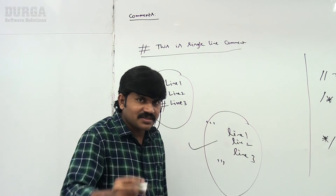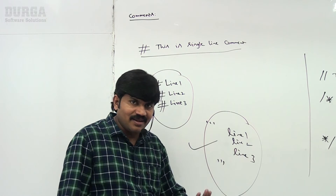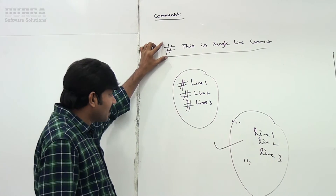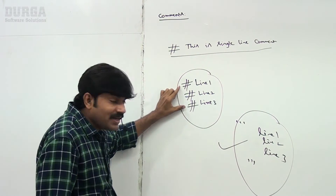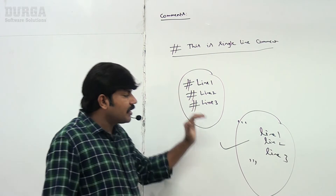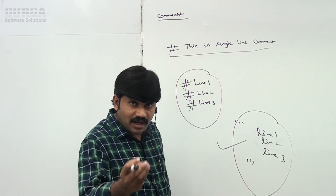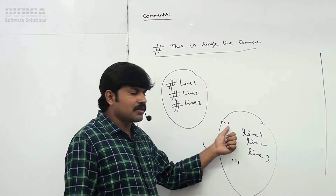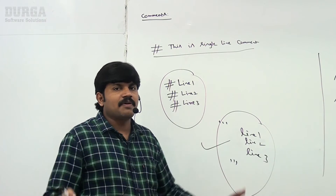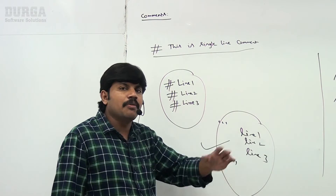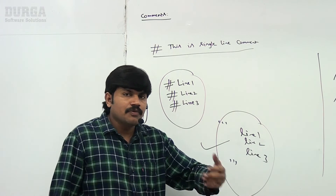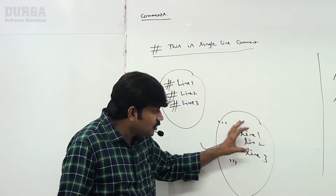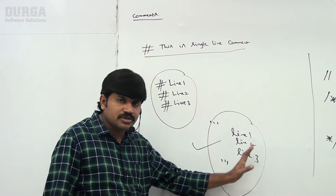Triple quotes are a documentation string (docstring). We will discuss that in detail in the next sessions. Multi-line comments are not available in Python — that is an important point. Some books incorrectly say triple quote symbols create multi-line comments, but this is actually a documentation string used when generating code documentation.